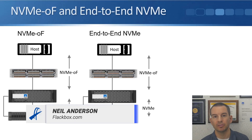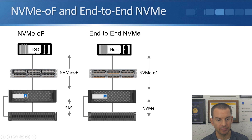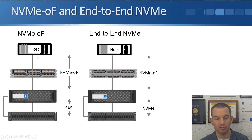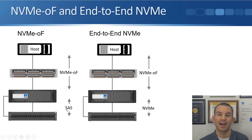First, let's talk about the difference between NVMe OF and end-to-end NVMe. You can see in the first diagram on the slide here on the left, this is NVMe OF — NVMe over fabrics. We've got the host and then a network infrastructure connecting that to the storage. Here we're using NVMe over fabrics as the protocol between the host and the storage system over the network.